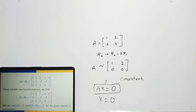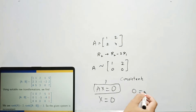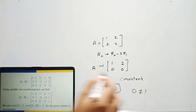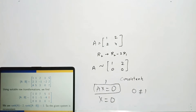Now you understand those initial results about consistency — if rank(A) ≠ rank([A|B]), the system is inconsistent. The ranks must be equal for consistency.